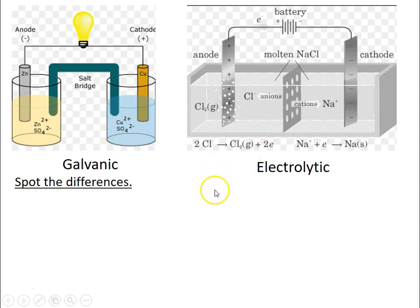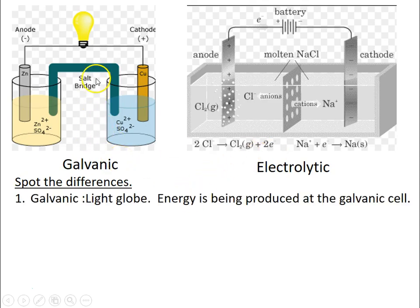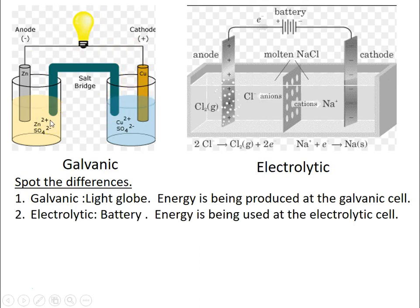If you look at these two setups, the light bulb in this one is kind of glaringly obvious. This particular setup is producing electrical energy from chemical energy, whereas the other setup has a battery or some sort of power supply — so you're using electrical energy to produce chemicals. The battery is a real giveaway that this is an electrolytic process, and a light globe being powered by electrical energy would suggest that it's galvanic.